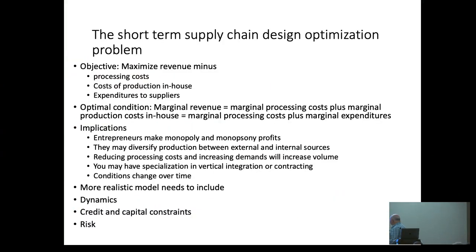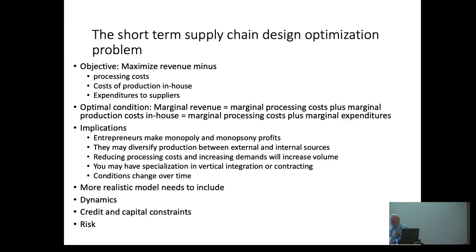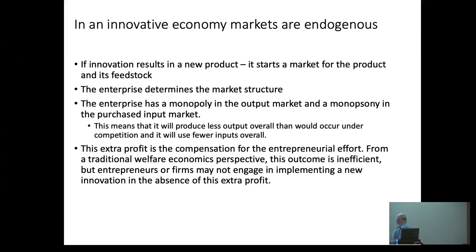You have monopoly and monopsony profit, and you diversify production between external and internal sources. If you have risk, you take it into account. If an external source is not reliable, you produce more things internally. This is the basic model.